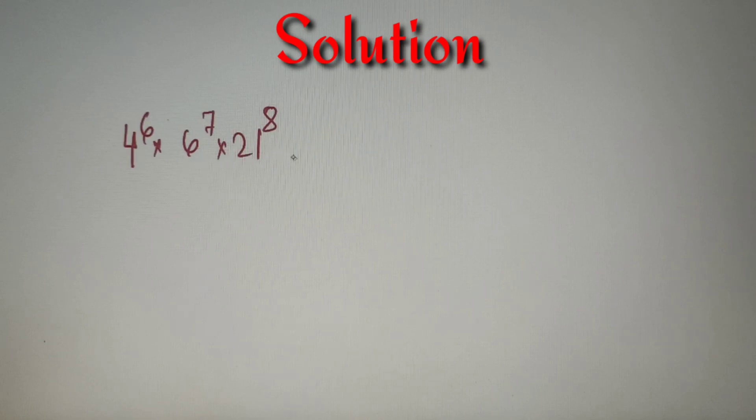Now the first step to find the number of perfect square factors is to prime factorize the given number. To prime factorize a number is basically to represent a number as its prime factors raised to arbitrary powers.